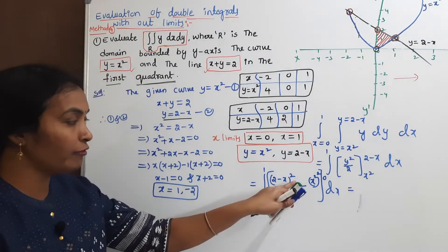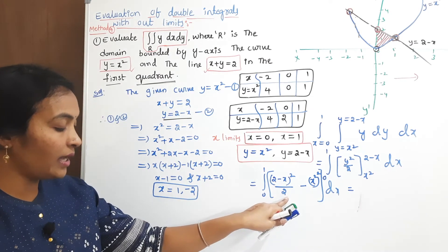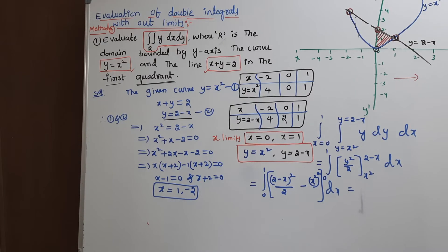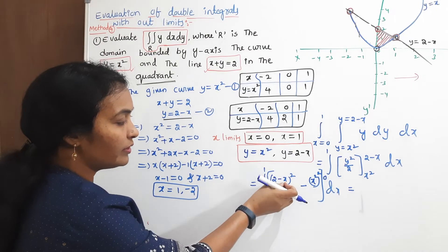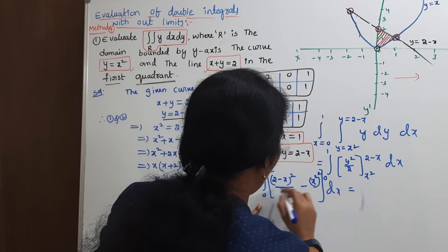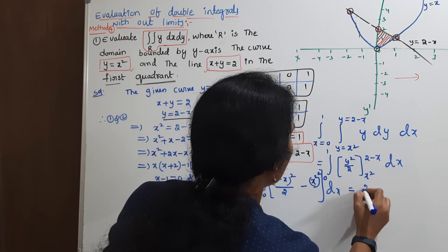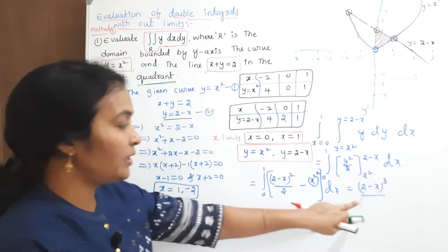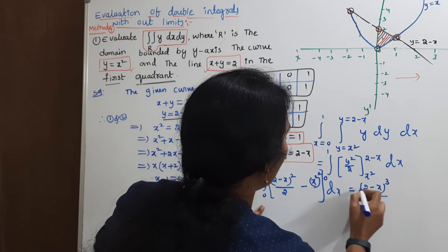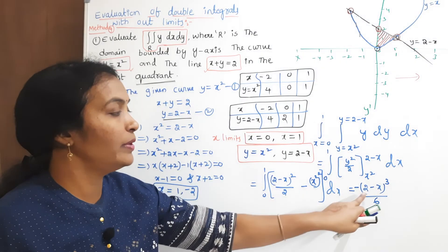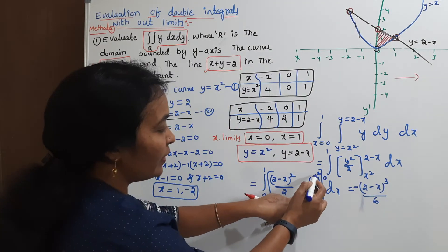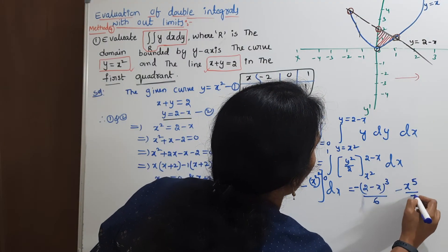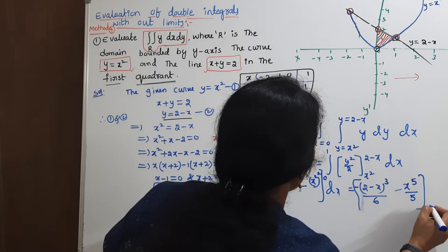This looks like x to the power of n, so apply the integration formula. Taking 2 minus x and applying the power rule, after integrating with respect to x, (2 minus x) squared becomes (2 minus x) cubed by 3, and dividing by the existing 2 in the denominator gives (2 minus x) cubed over 6. The differentiation of 2 minus x gives minus 1, so there is a minus sign. And x to the power 4 integrates to x to the power 5 over 5. The limits are 0 to 1.